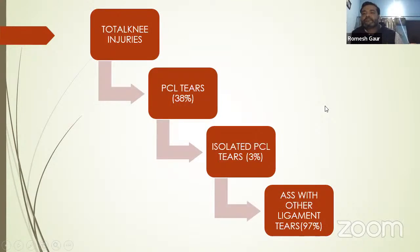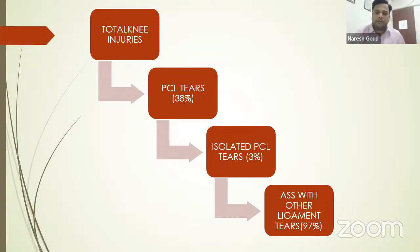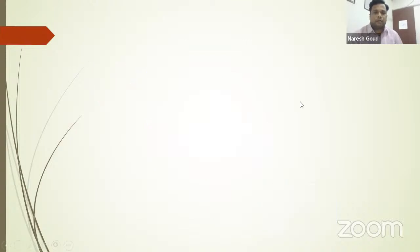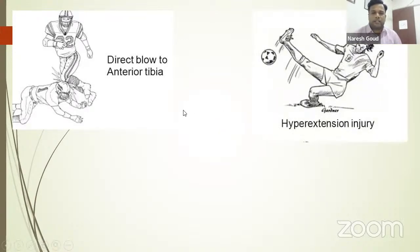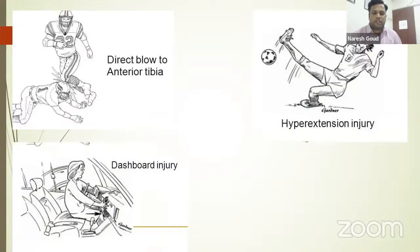Of all total knee injuries, PCL tears comprise 38 percent. Isolated PCL tears are only 3 percent — most PCL tears are associated with other ligament tears or concomitant pathologies. The most common mechanism of injury is a posteriorly directed force from the anterior side of the tibia, such as a direct blow to the anterior tibia while playing sports like football or rugby, a hyperextension injury, or dashboard injuries — which can also cause knee dislocations, other ligament tears, femoral shaft fractures, and hip dislocations.